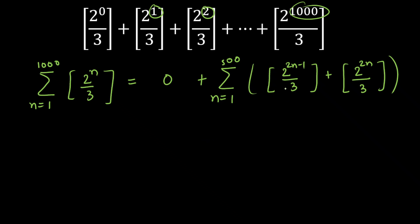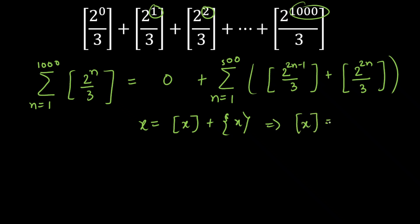The big idea is: I am going to write these two GIFs using the identity that any number x can be written as its greatest integer function plus its fractional part. So GIF of x equals x minus the fractional part of x. To write the fractional part, I will need the remainder when 2 raised to an odd power is divided by 3, and when 2 raised to an even power is divided by 3.